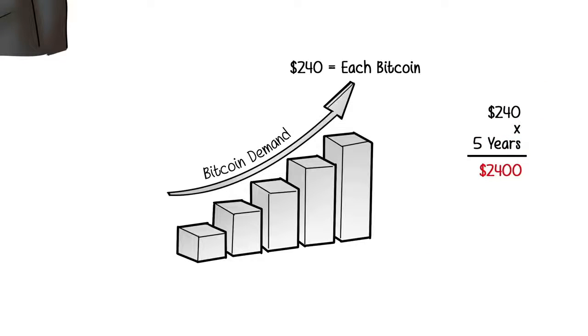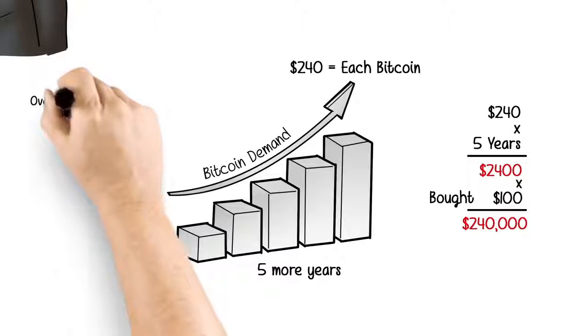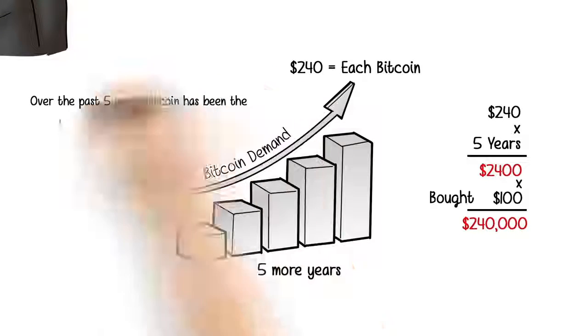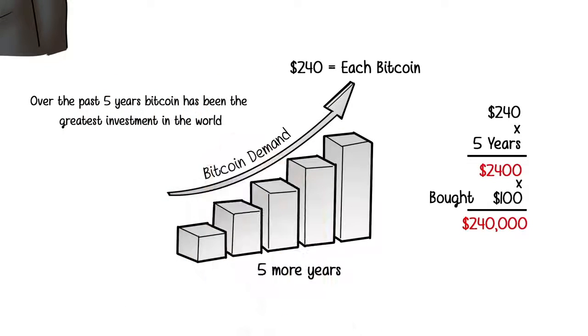Five years ago, if you would have bought $1 worth of Bitcoin, you would now have $2,400. If you would have bought $100 worth of Bitcoin, you would have had $240,000. Over the past five years, Bitcoin has been the greatest investment in the world that we know of.